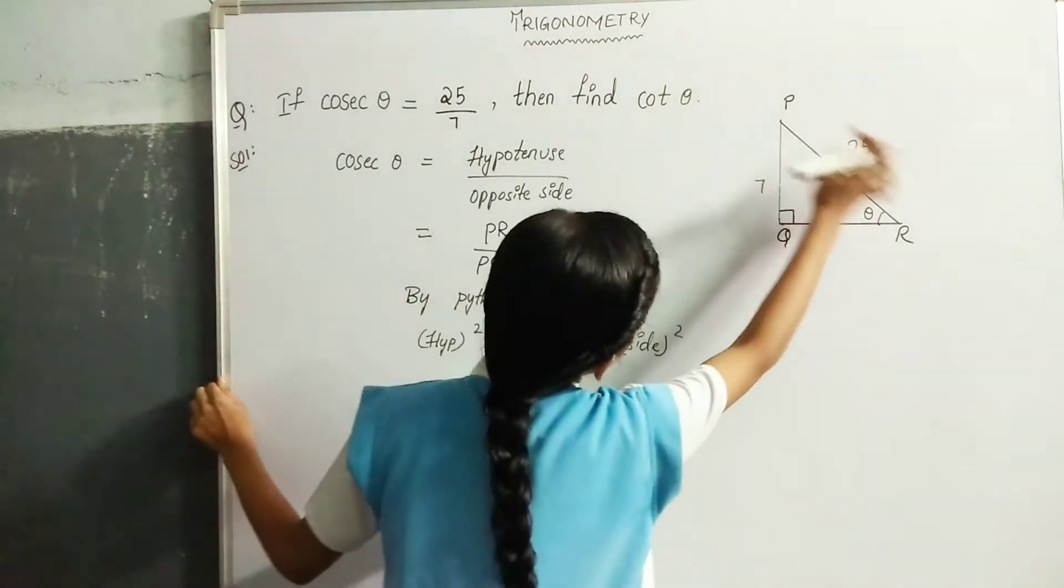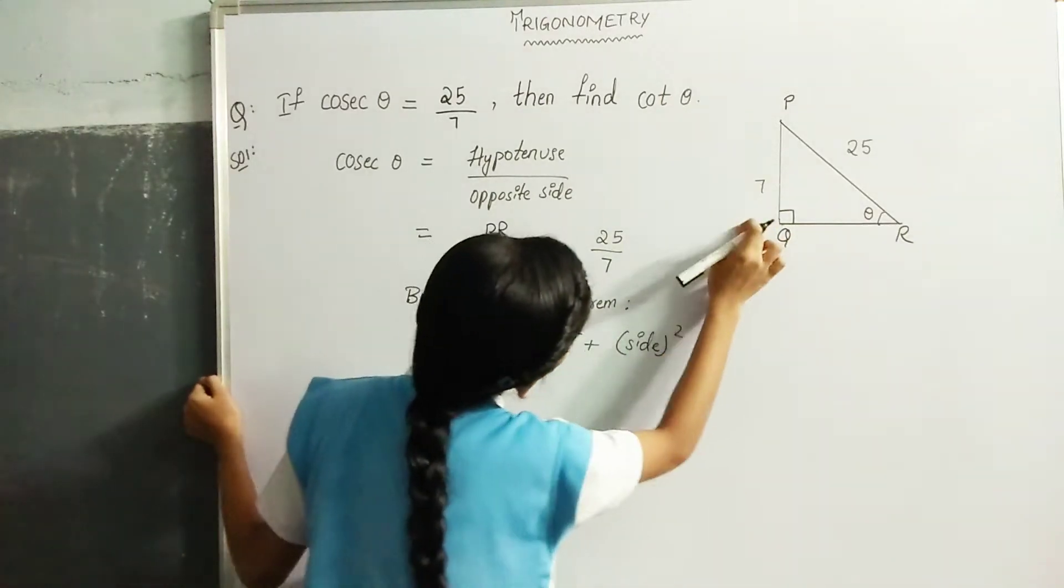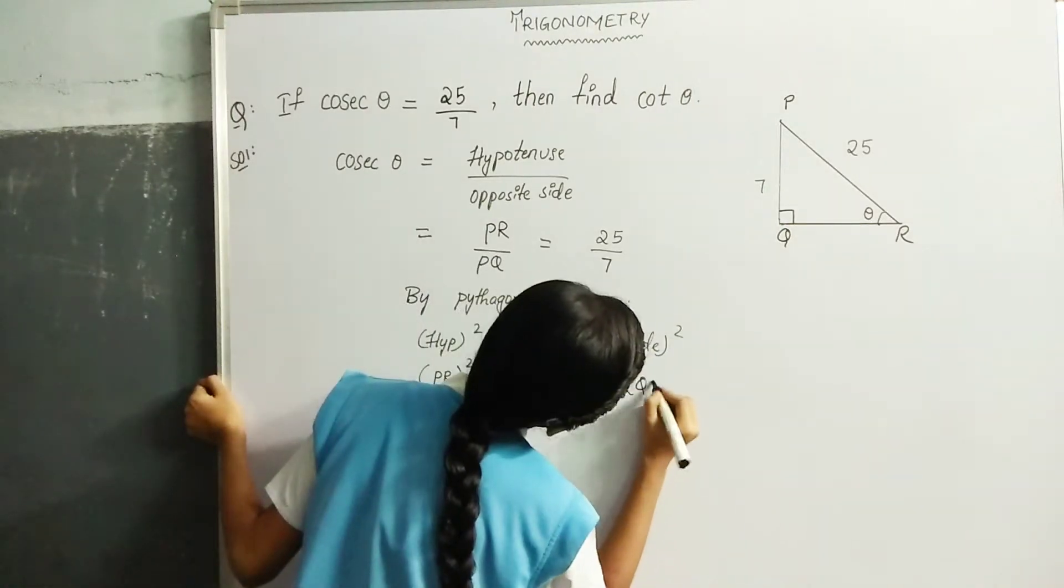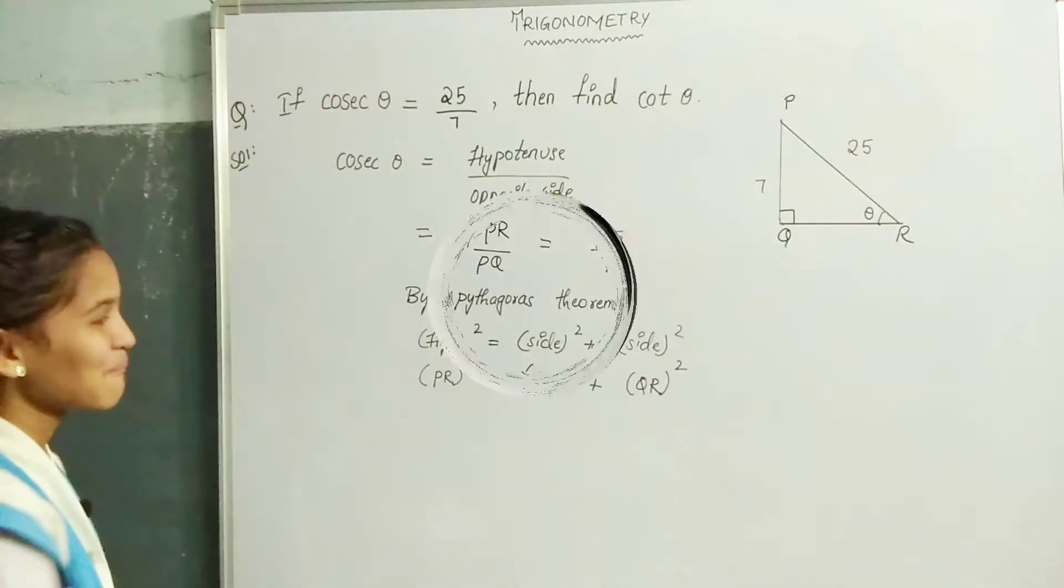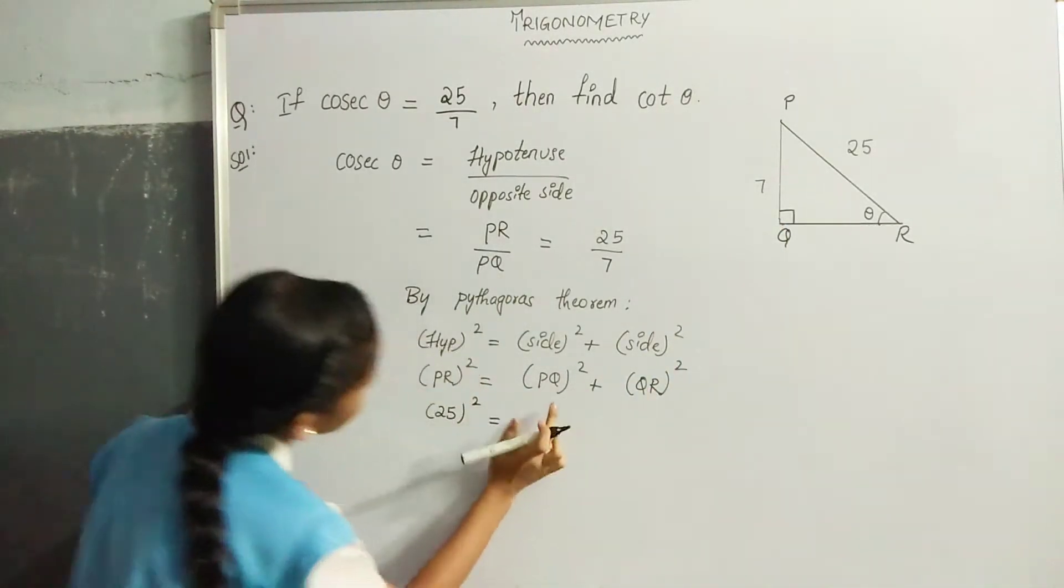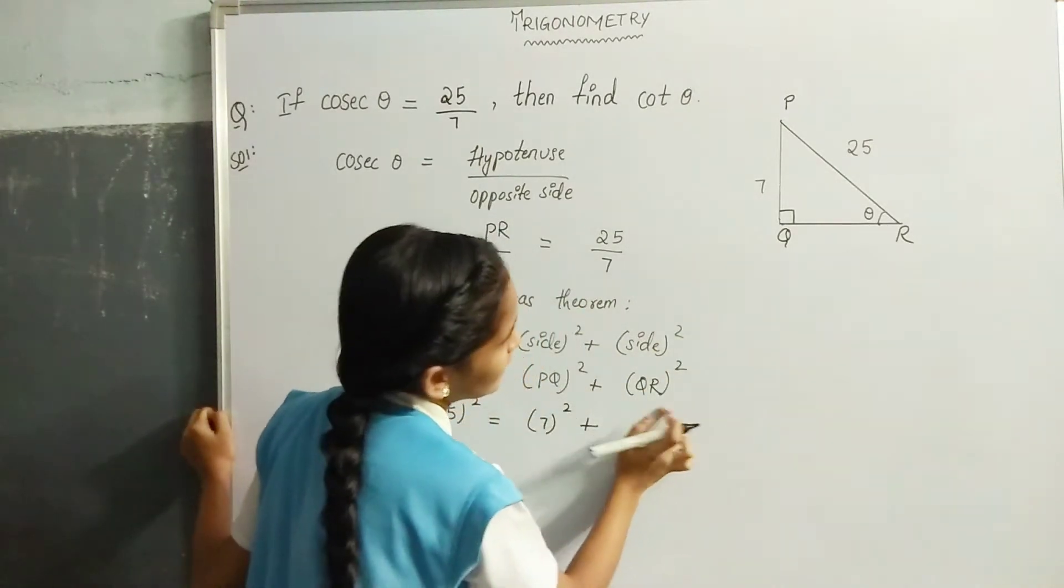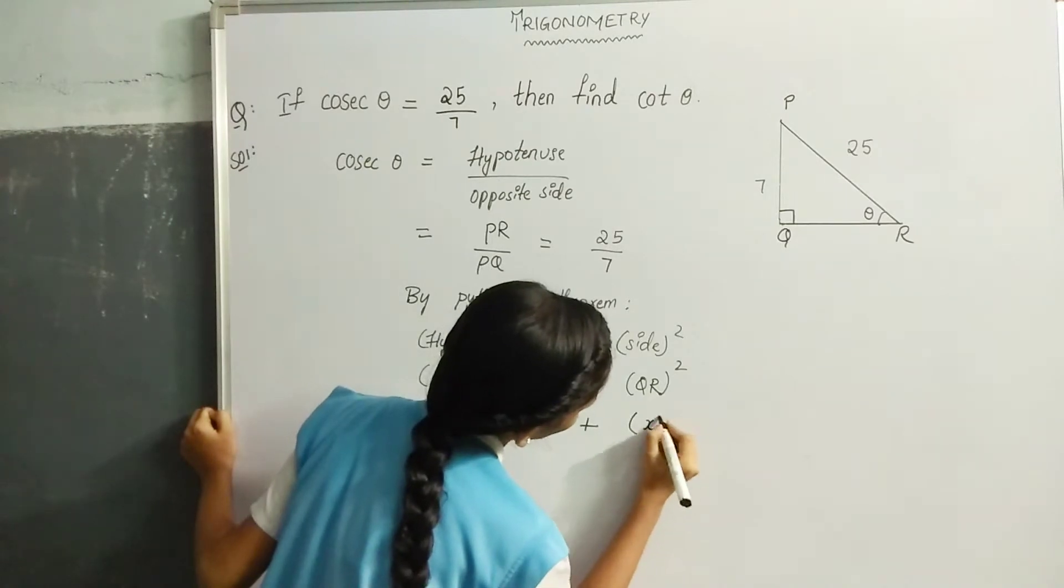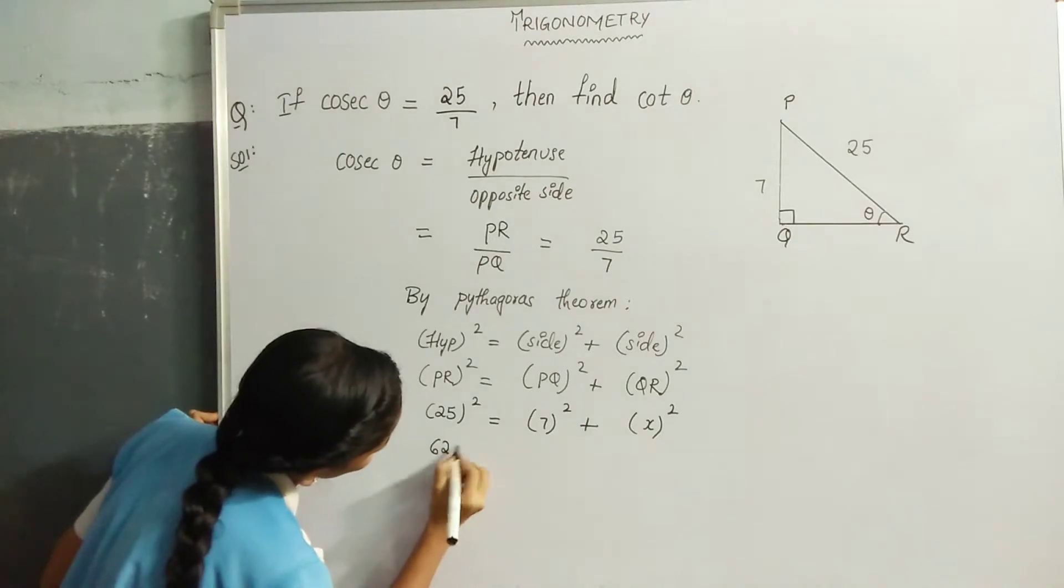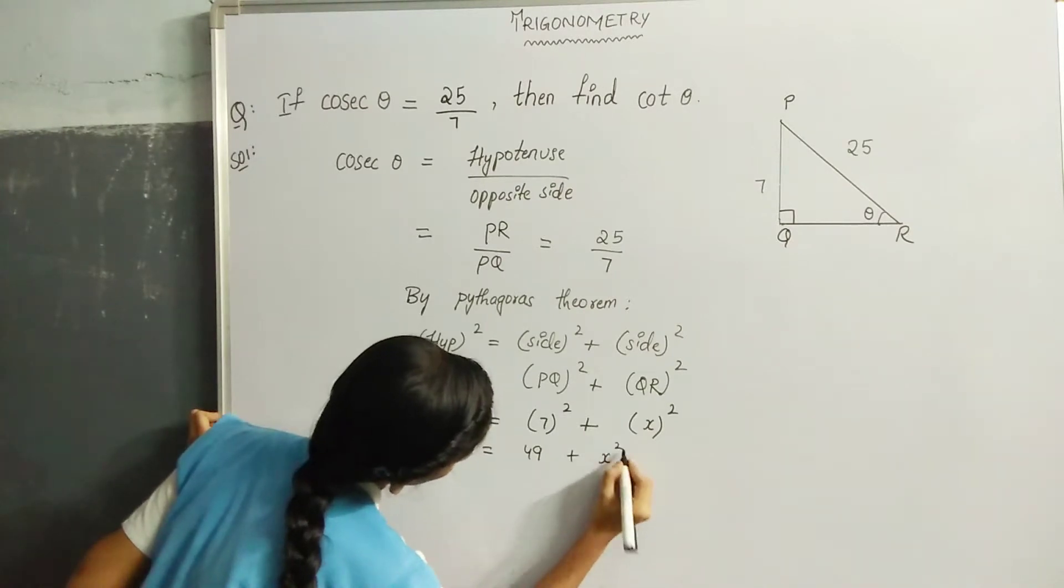Hypotenuse square is PR. PR square is equal to side square PQ square. Another side is QR square. PR square is 25 whole square, and PQ square is 7 square plus QR is we are assuming QR as X square. We know that 25 whole square is 625 is equal to 7 square is 49 plus X square.